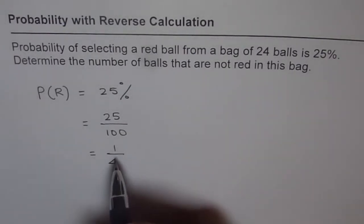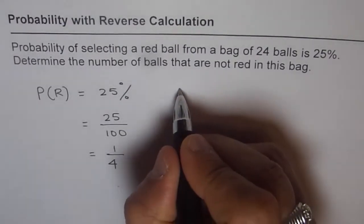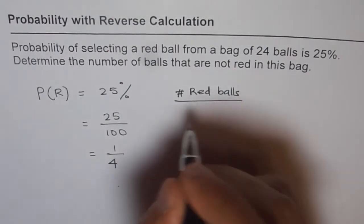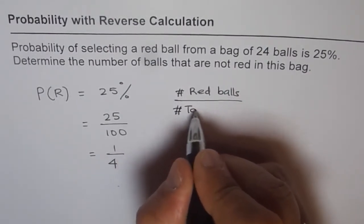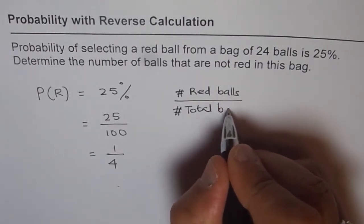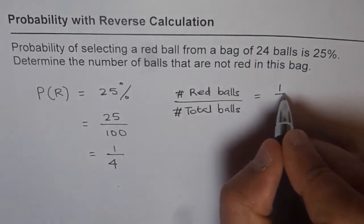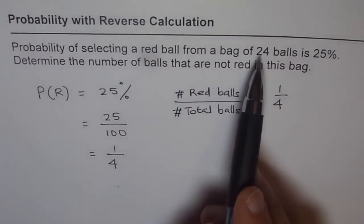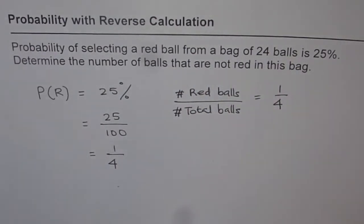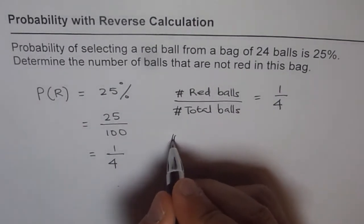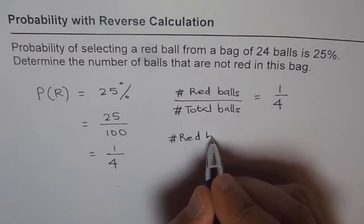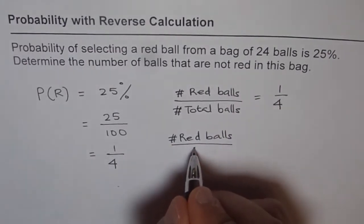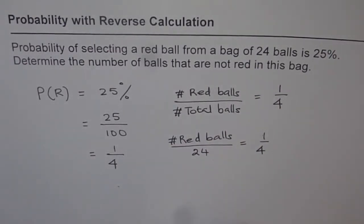The meaning of one-fourth is that the ratio of red balls to the total number of balls is one out of four. So we say: number of red balls over total number of balls equals one over four. In this question, the bag has 24 balls total, so we can set up: number of red balls over 24 equals 1 over 4.